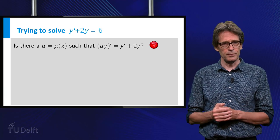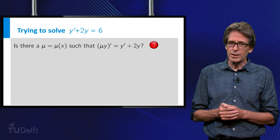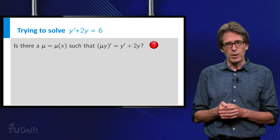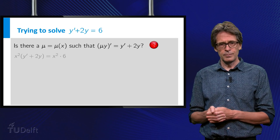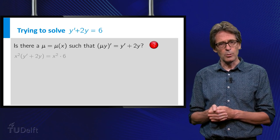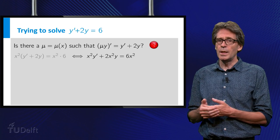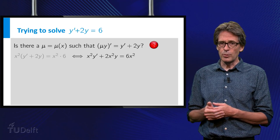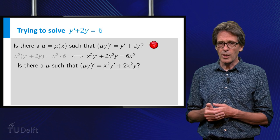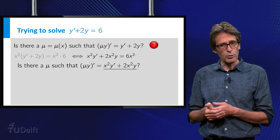Where do we find this factor? Let's see what happens if we multiply the equation by x squared. Then the equation becomes as you can see. Now that we have put the equation in this form, can you recognize the underlined part of it as the outcome of the product rule?